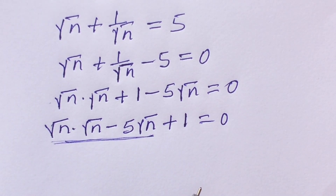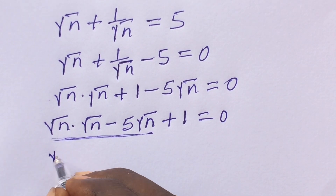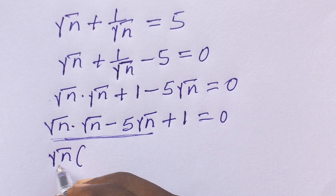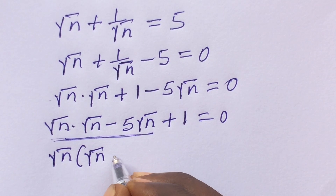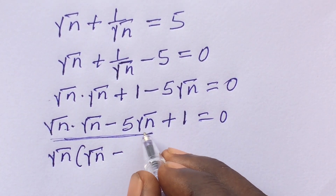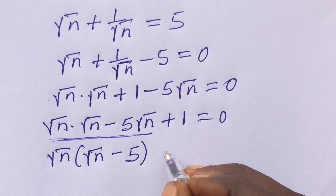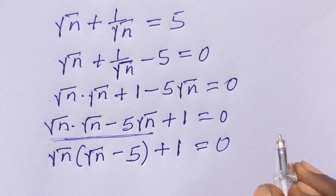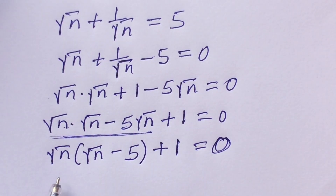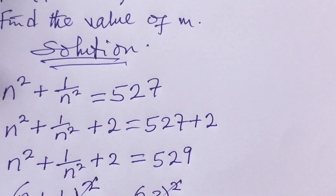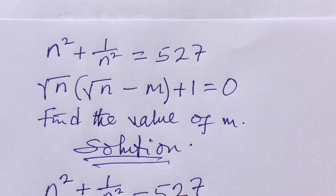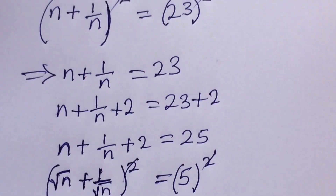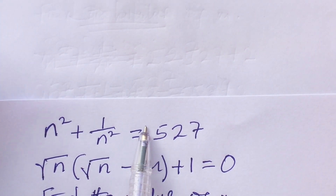Now we factor out √n from the first two terms. This gives us: √n(√n − 5) + 1 = 0. Now compare this expression to the second equation given in the problem, which is √n(√n − m) + 1 = 0. They are structurally identical.